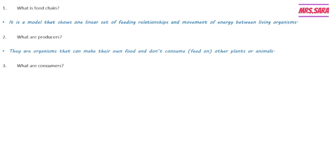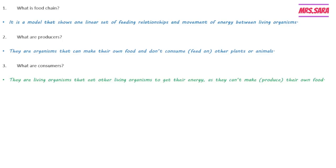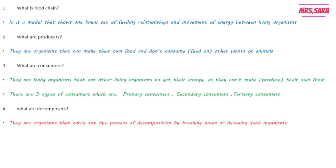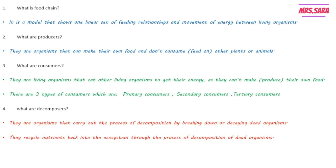What are consumers? Consumers are living organisms that eat other living organisms to get their energy, as they can't produce their own food. There are three types: primary, secondary, and tertiary consumers. Decomposers are organisms that carry out decomposition by breaking down or decaying dead organisms, recycling nutrients back into the ecosystem through decomposition.